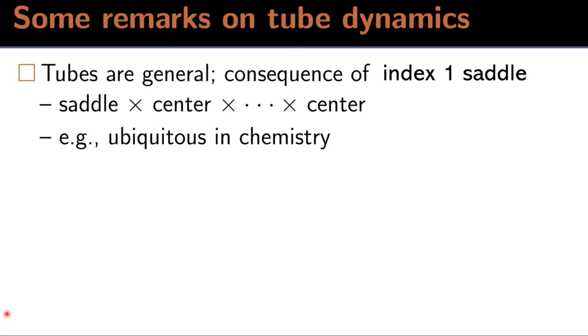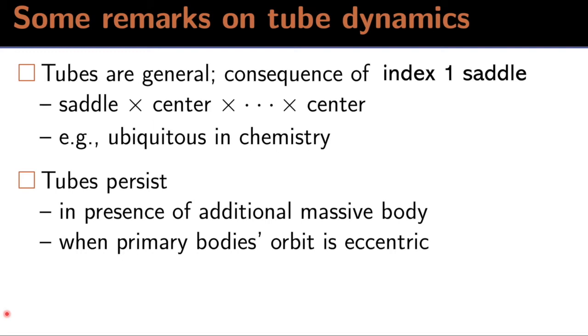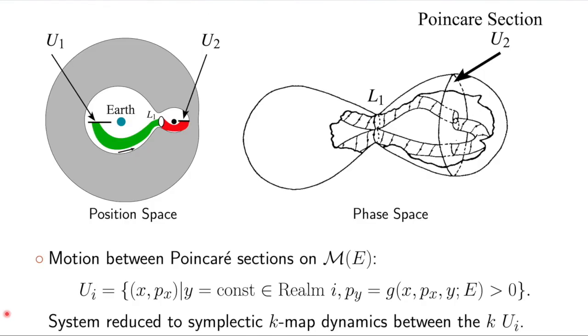They are ubiquitous in chemistry and are related to reaction rates that are often viewed along potential energy surfaces. We've found numerically and proven in some cases that these tubes persist when you add an additional mass of body, or, for example, when one adds other perturbations to the planar circular restricted three-body problem, such as including eccentricity or other time-periodic perturbations. And, indeed, they've been observed in the solar system. We've even seen them on galactic and atomic scales.